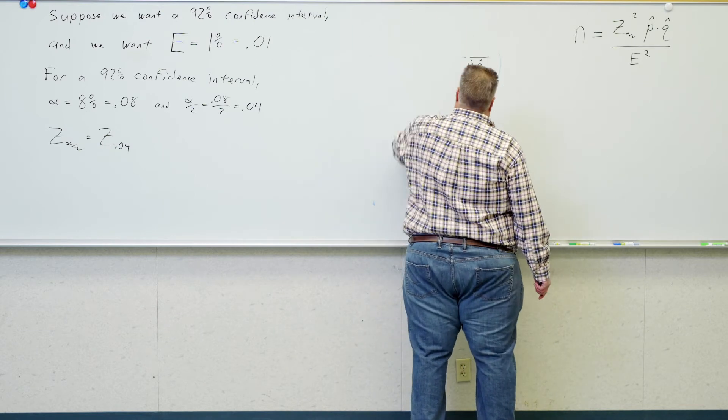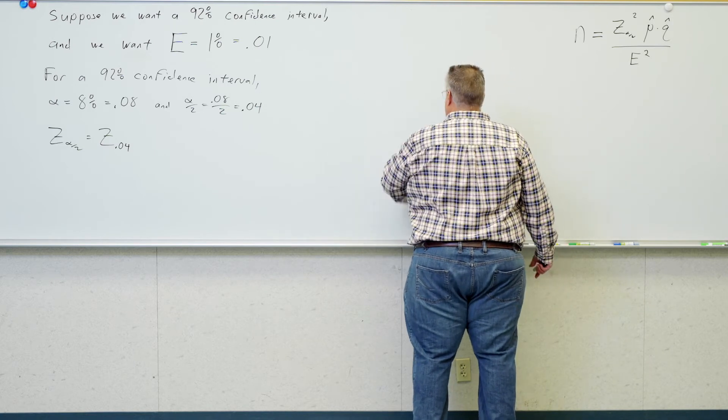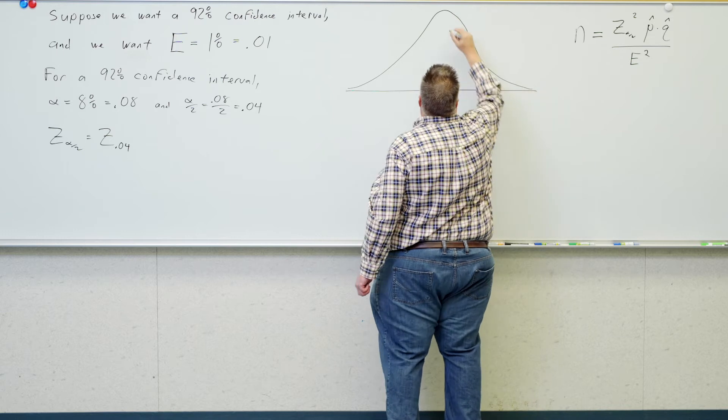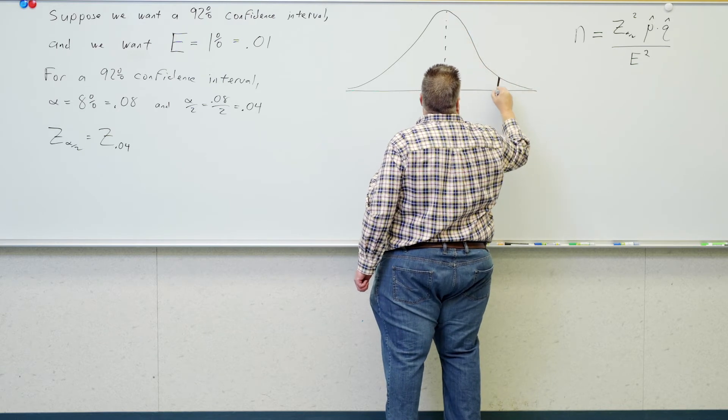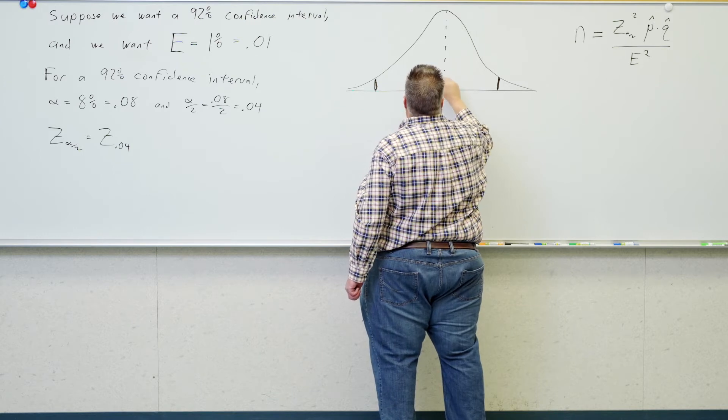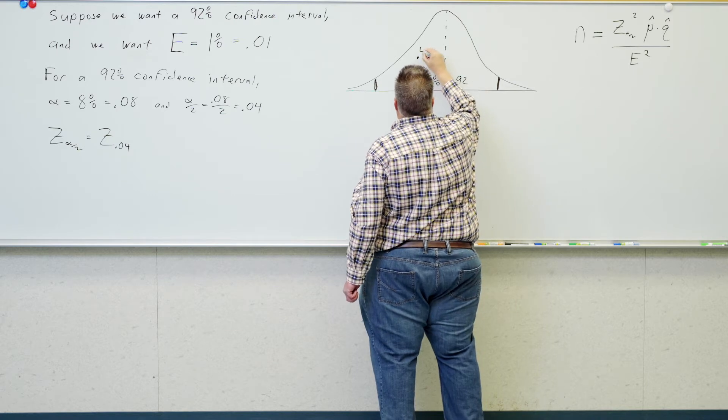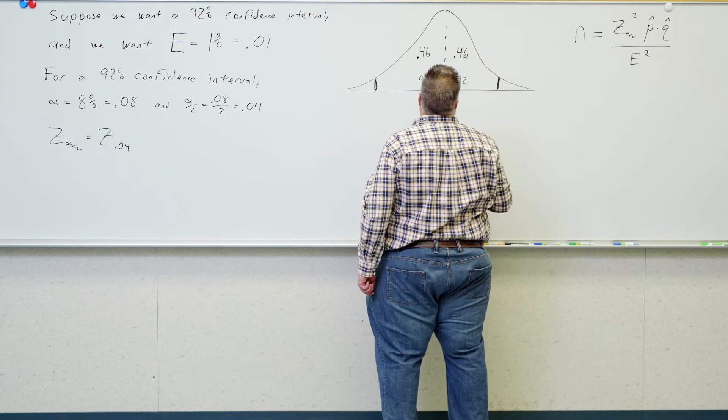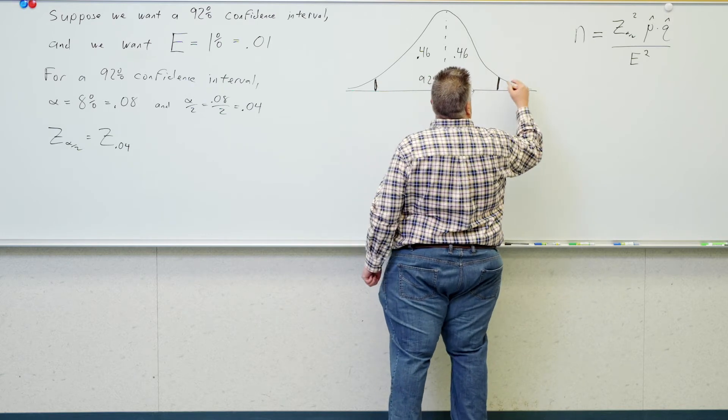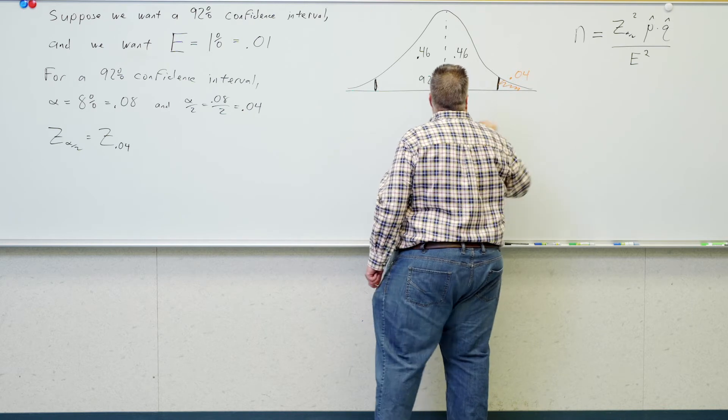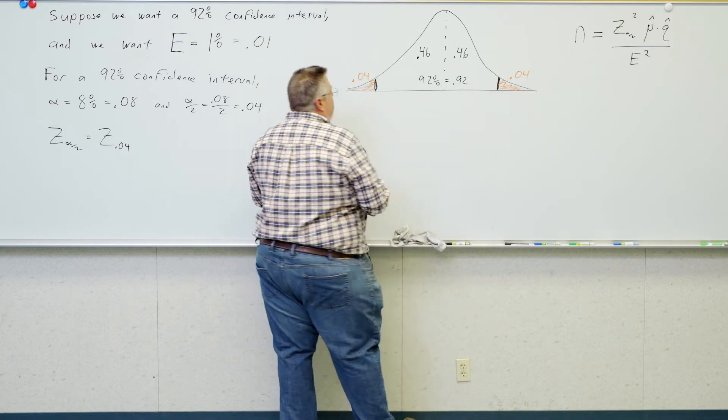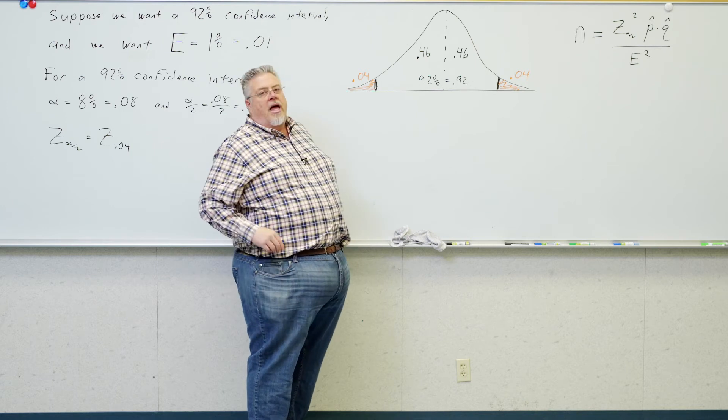So, a little review on how to get that and a picture of what this looks like. I wanted a z score up here and down here so that this area is 92% which is .92. That's going to make this area .46 and this area .46. It's going to make my tails have an area of 4% each.